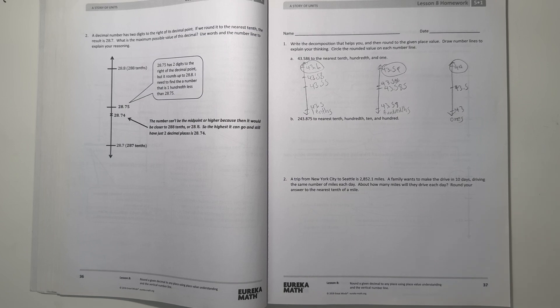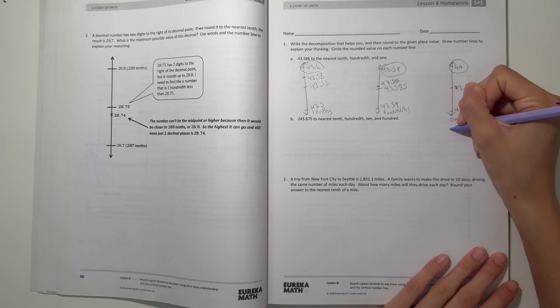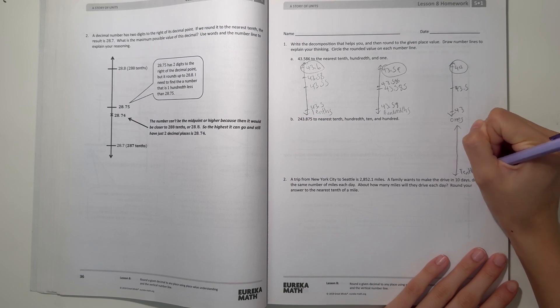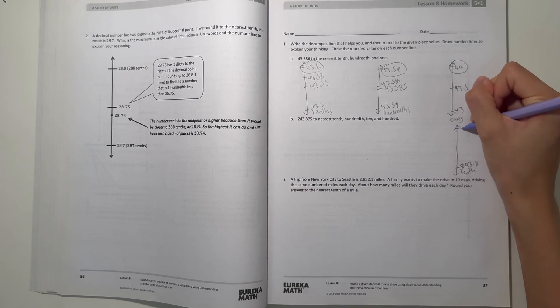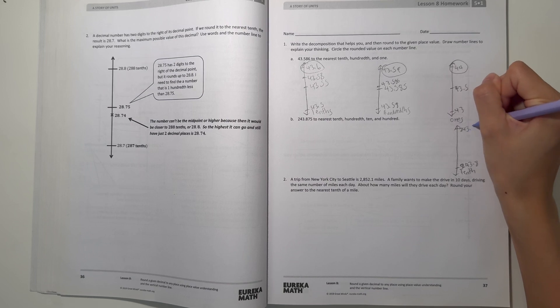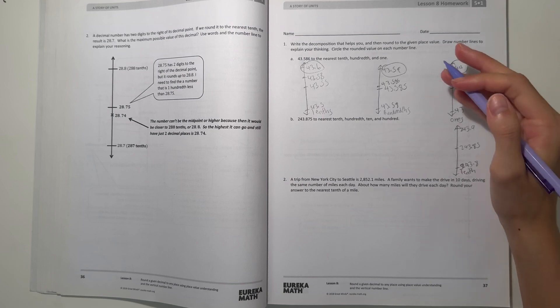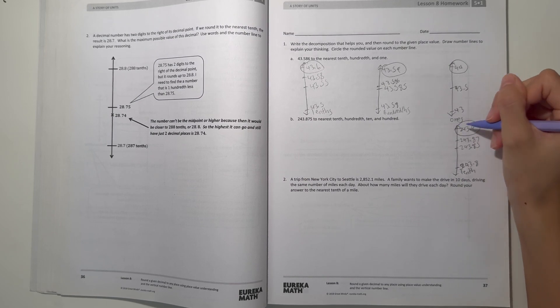Alright, and B, 243.875. So it's in the nearest tenths, hundredths. Let's do tenths first. So here would be 243.8 and it would be 243.9. And our midpoint would be 243.85. So here we have 243.87, so that would be like over here. So now I round up to 243.9.